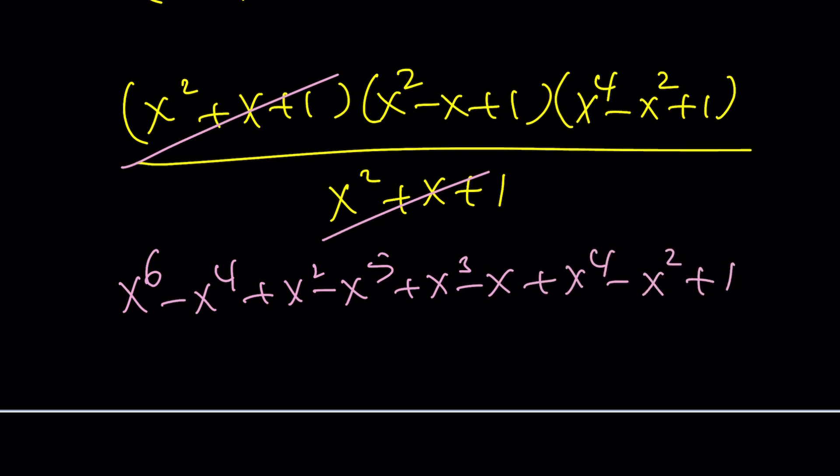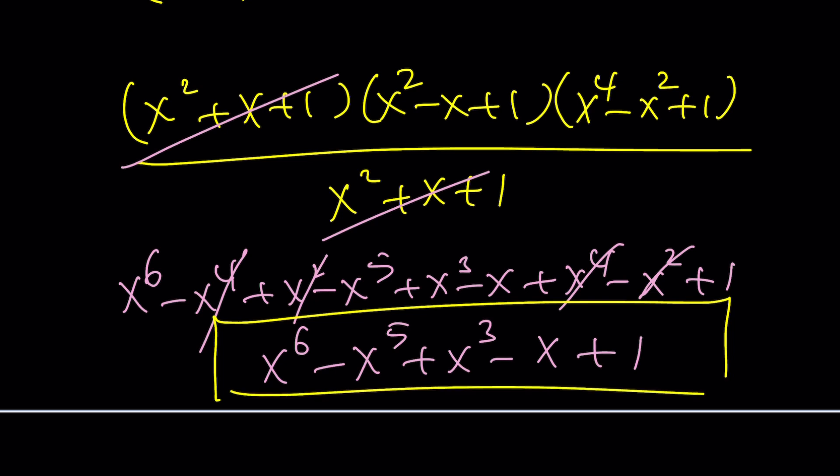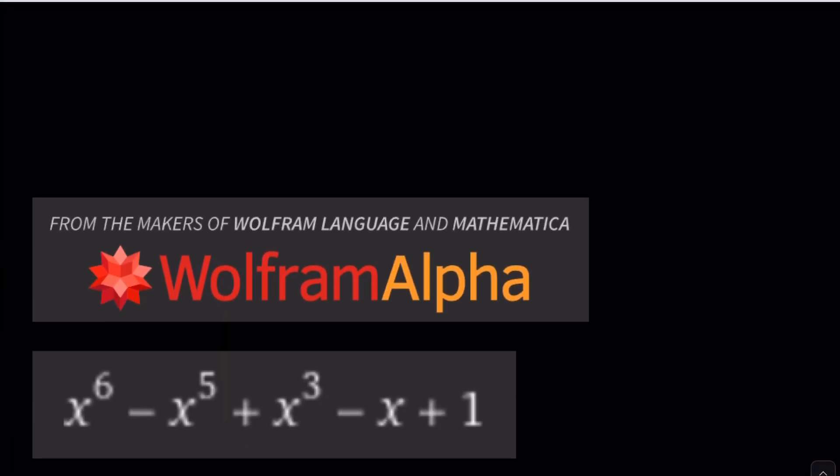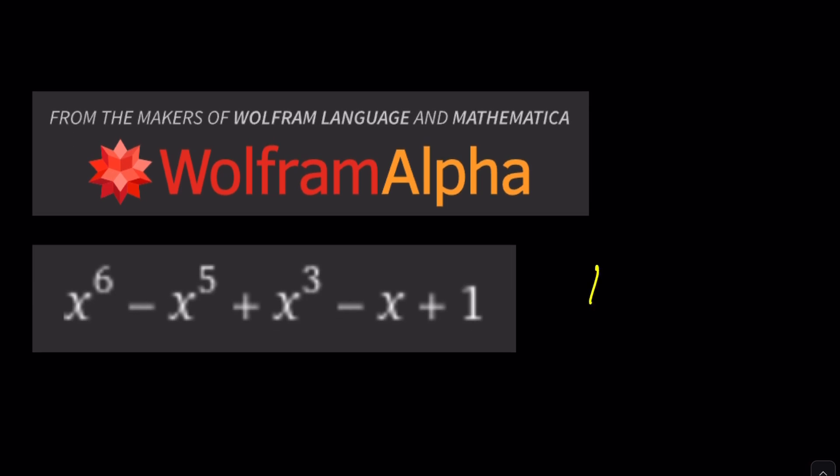And then from here, x to the fourth cancels out. x to the second cancels out. And we end up with the same exact answer. And if you use Desmos, I don't know if I included the solution from Wolfram Alpha or Desmos. Yes, I did. Great. Awesome. This is from Wolfram Alpha. Good job. And this brings us to the end of this video.